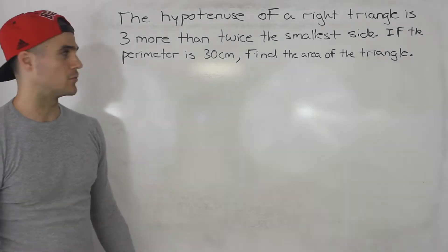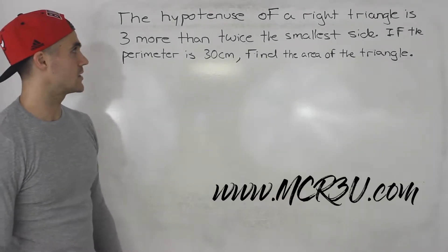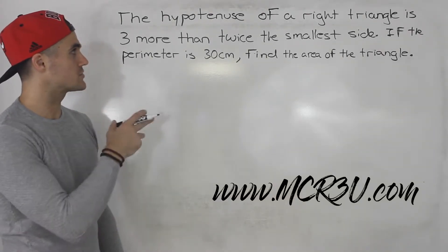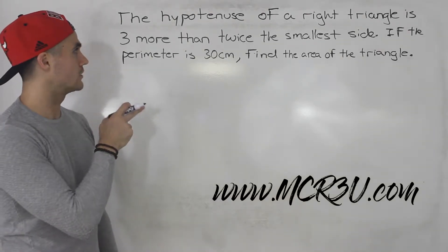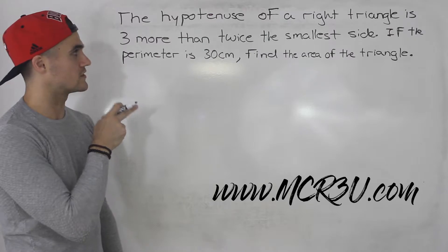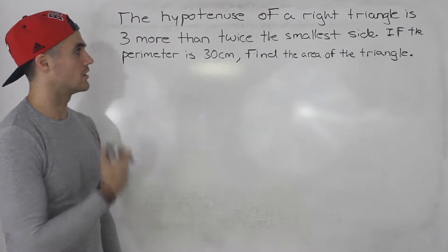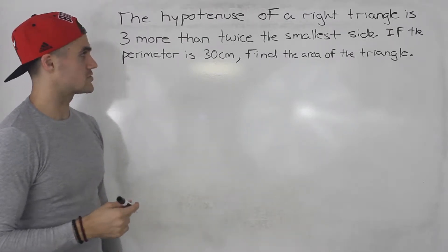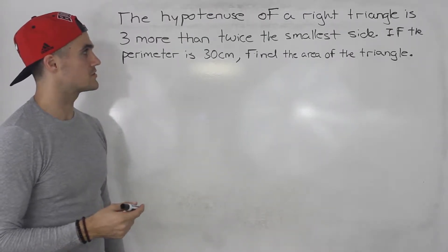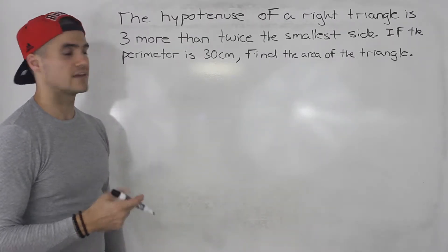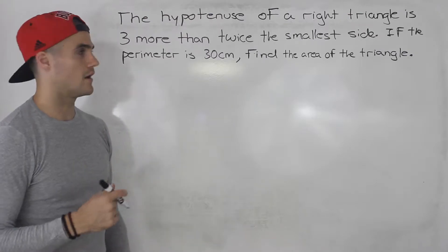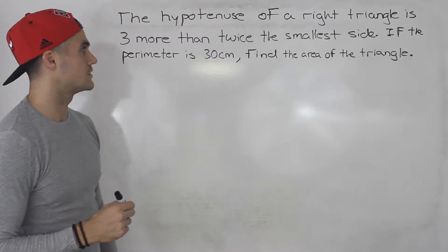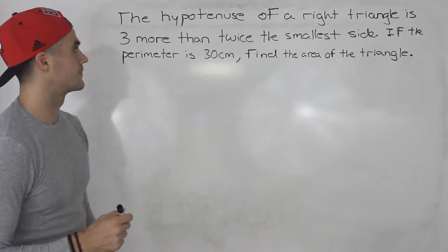Welcome back guys, Patrick here. Moving on to the next question. The hypotenuse of a right triangle is three more than twice the smallest side. If the perimeter is 30 centimeters, find the area of the triangle.